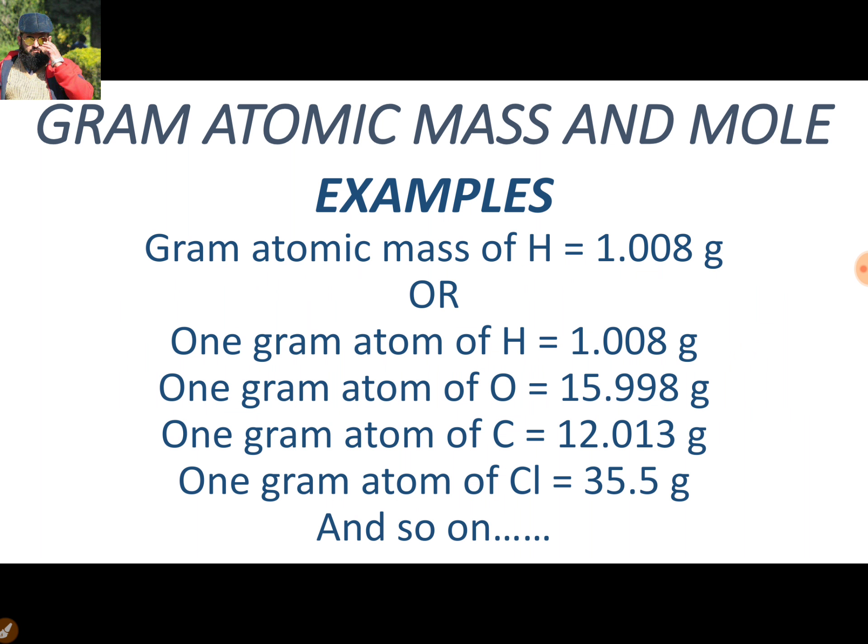Let us have a look at the examples of gram atomic mass. We know that the relative atomic mass — as discussed in one of our previous videos — the relative atomic mass of the hydrogen element is 1.008 AMU. So here we are taking gram atomic mass, which is simply the same relative atomic mass of hydrogen expressed in grams. The gram atomic mass of hydrogen is 1.008 grams, or one gram atom of hydrogen is 1.008 grams.